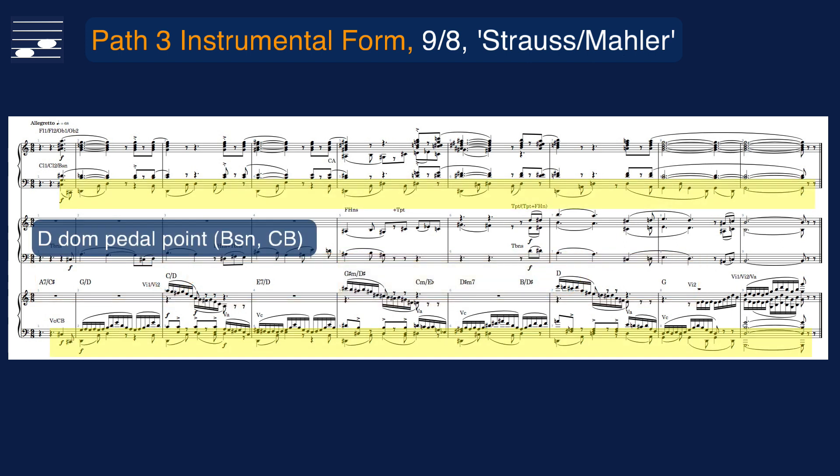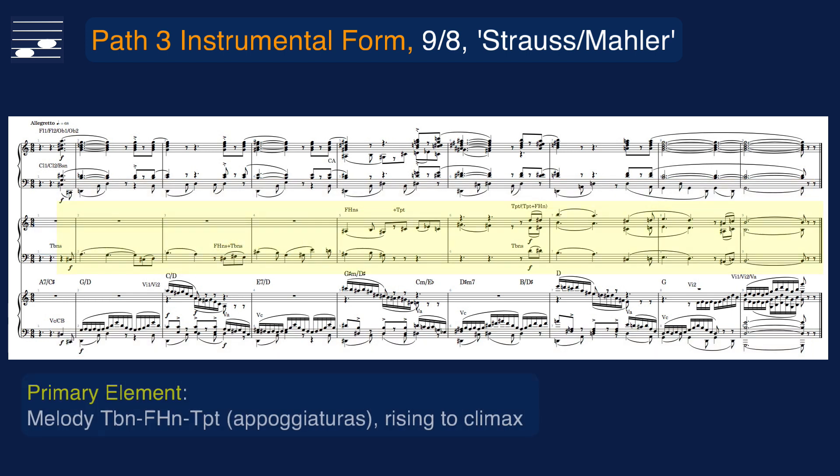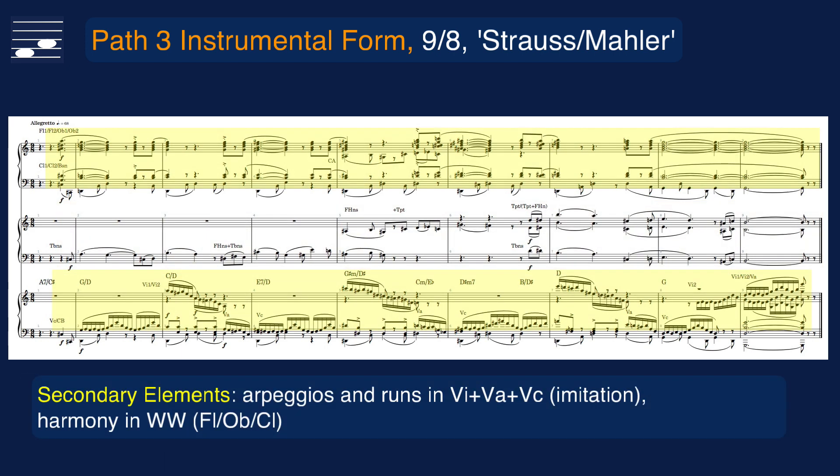The pedal point notes are played as arpeggio patterns in bassoon and contrabass. Another Richard Straussian or Wagnerian feature is the primary melody played in imitative phrases by brass, from the low trombones to the high trumpets at the end. As secondary elements we have the 16th note runs in the strings, and the harmony background for pairs of flutes, oboes and clarinets.